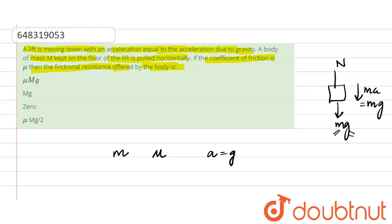N is the normal force on the body acting upward due to the lift, and mg is the force due to gravity acting on the body in a downward direction. The mass m is kept on the floor of the lift. The net force equation gives us: net force equals mg minus N, which equals mg, since the lift accelerates downward at g.